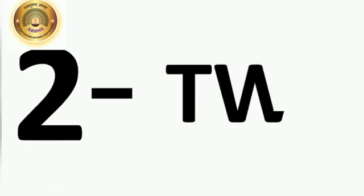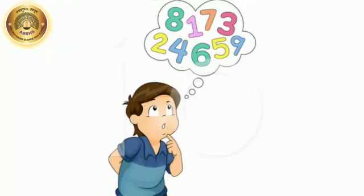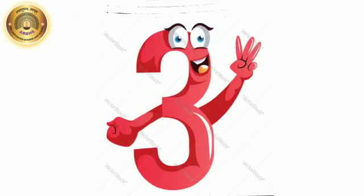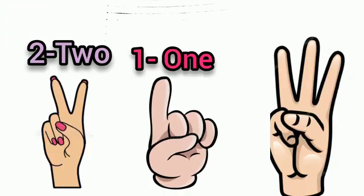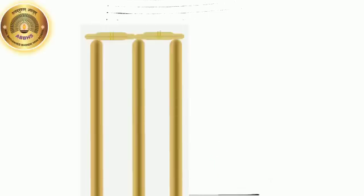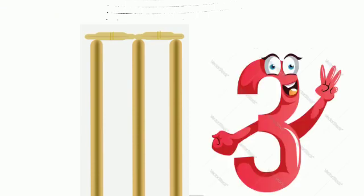Students, repeat after me: Two. T-W-O. Two. Can you tell me which number will come after two? Number three. Two and one make three. See the next picture. What are these? These are stumps. And how many stumps are there? There are three stumps.